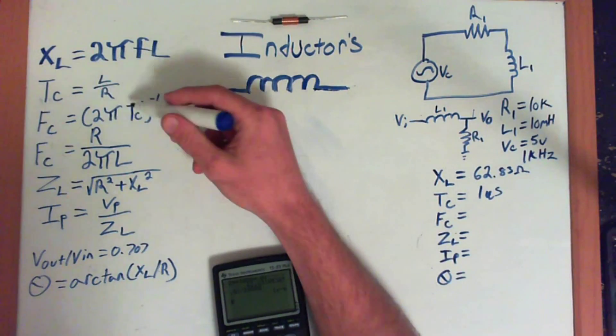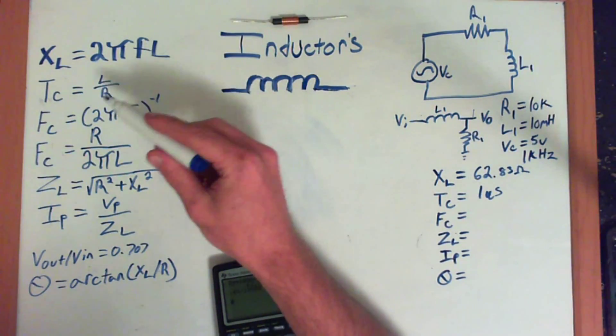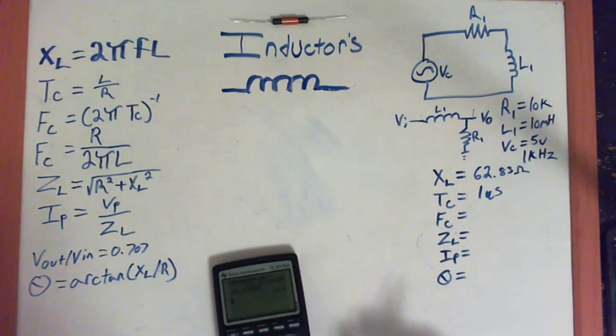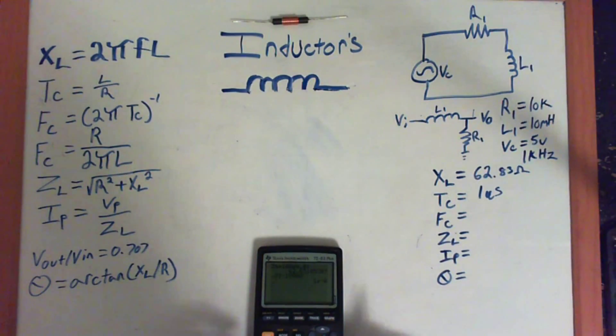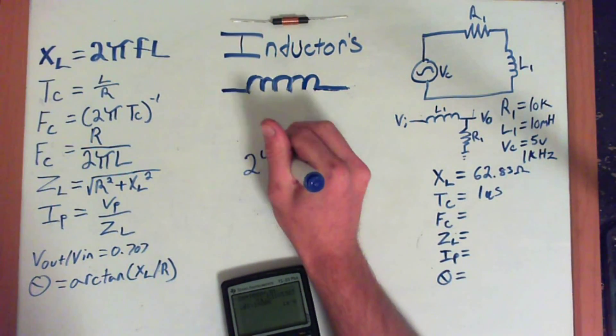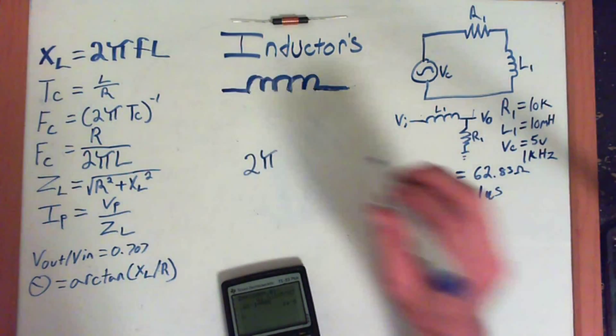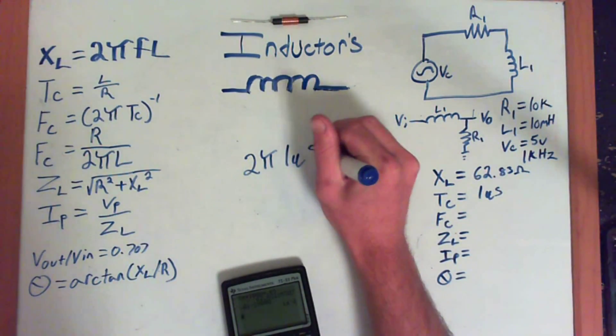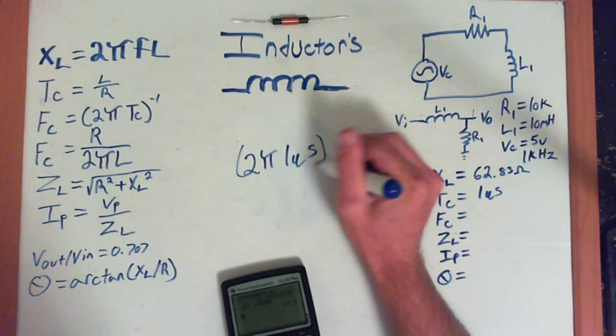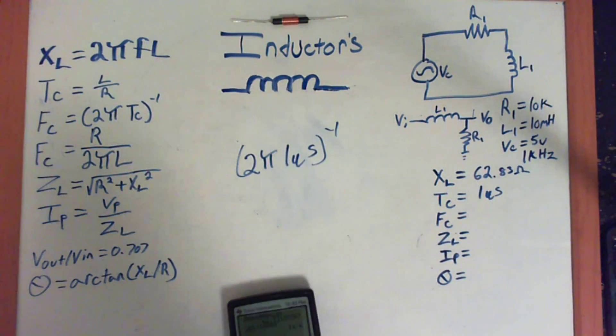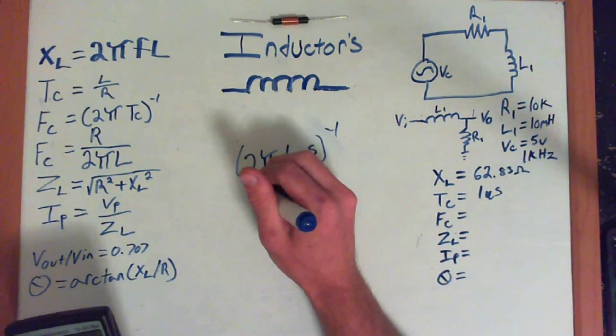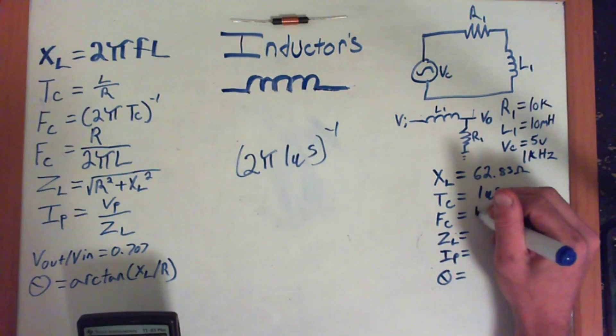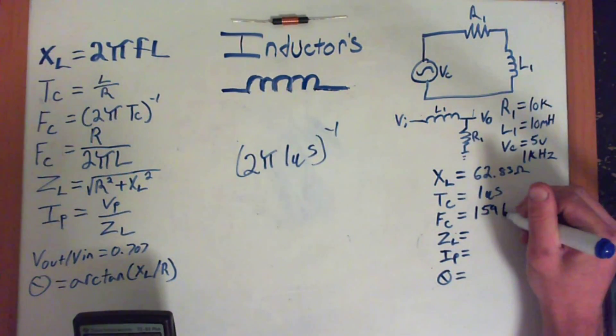So our frequency cutoff is going to be 2π times the time constant, and then that's all going to be raised to the negative 1, or the reciprocal of it. So let's go ahead and punch that in. So that's going to be 2π times the time constant, which is 1 microsecond, and then that's all going to be raised to the negative 1. So if we punch that in the calculator, that's 2π times 0.000001. And that's going to be raised to the negative 1 power. So our frequency cutoff is going to be 159,000 Hz.